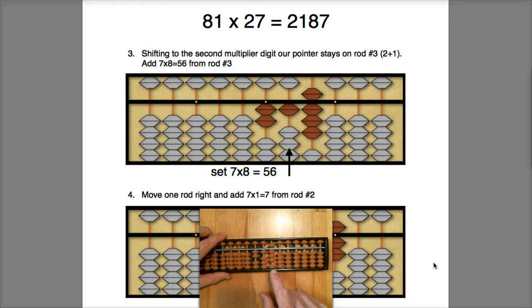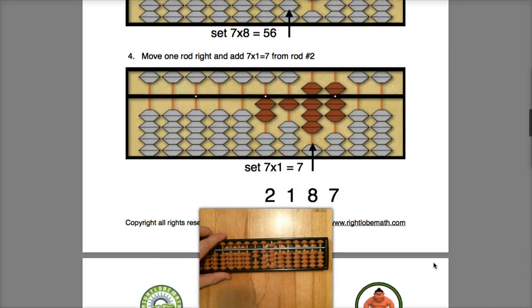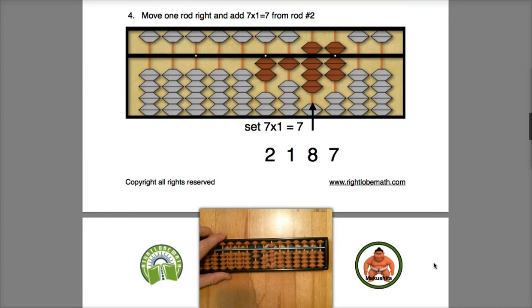Let's move on. Now we will move one rod to the right and multiply the 7 times the 1 in the multiplicand. Seven times 1 is 7, and we enter that as a 0 and a 7. So there we have our final answer of 2,187.